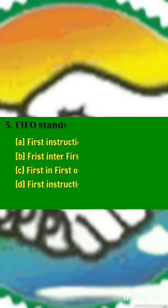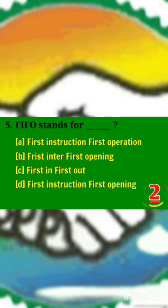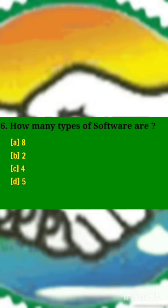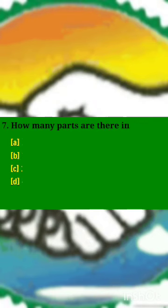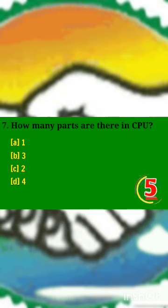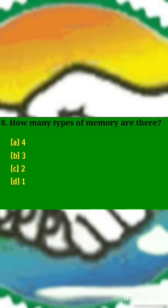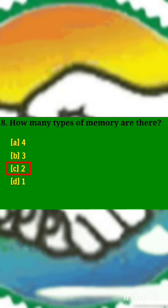FIFO stands for? Answer C: first in, first out. How many types of software are there? Answer B: two types. How many parts are there in CPU? Answer C: two parts. How many types of memory are there? Answer C: two types.